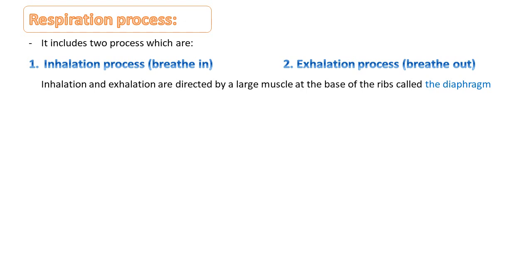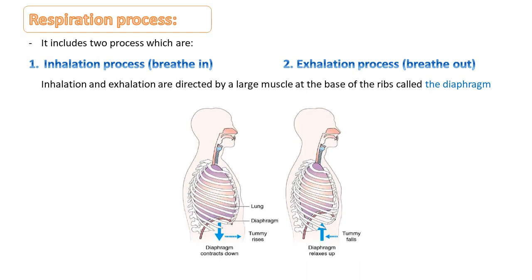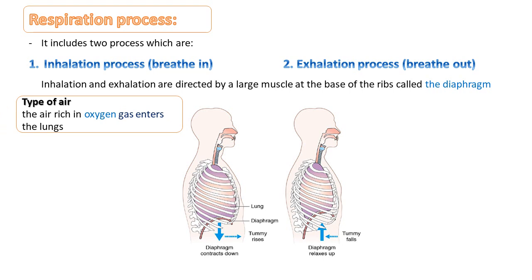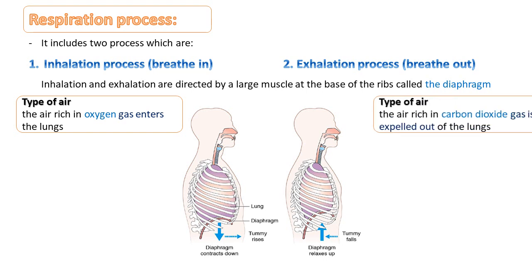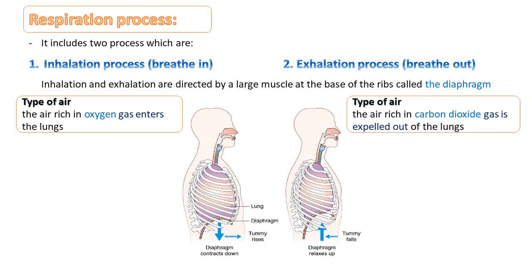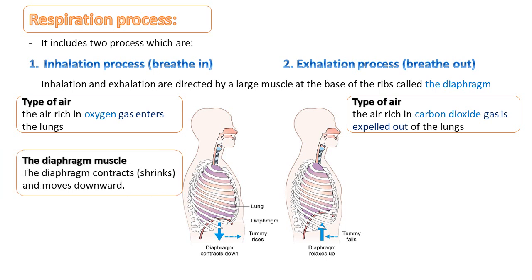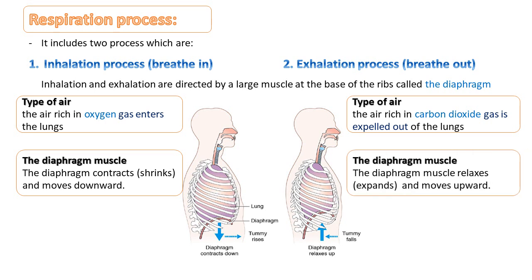Inhalation and exhalation are directed by a large muscle at the base of the ribs called the diaphragm. During inhalation, the type of air is oxygen and it enters the lungs. During exhalation, the type of air is carbon dioxide gas and it is expelled out of the lungs. The diaphragm muscle in inhalation contracts and moves downward, while in exhalation the diaphragm muscle expands or relaxes and moves upward.